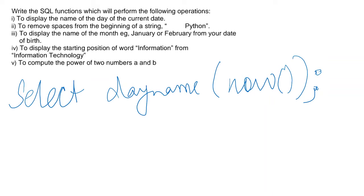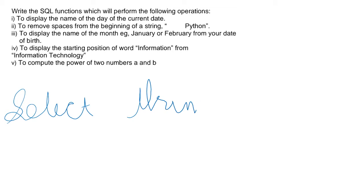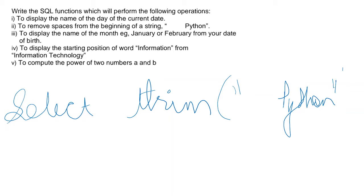We'll move towards the next question, which is to remove spaces from the beginning of the string 'Python'. Now there are left-side spaces, so what we'll write is SELECT LTRIM. We don't need TRIM here because there is only a left-side space, so we'll write LTRIM and inside the bracket give the string 'Python' with some spaces at the beginning.